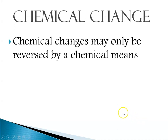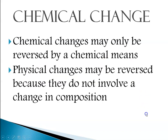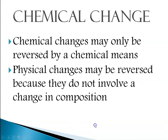Chemical changes involve the formation of new substances and may only be reversed through chemical means. Physical changes may be reversed because they do not involve a change in composition — however, some physical changes are easier to reverse than others. For instance, melting an ice cube is a physical change that can be reversed by putting it in the freezer. Others are not as easy: if I took a raw egg and threw it against the wall, that's still a physical change, but reversing it is not quite as easy — think Humpty Dumpty.